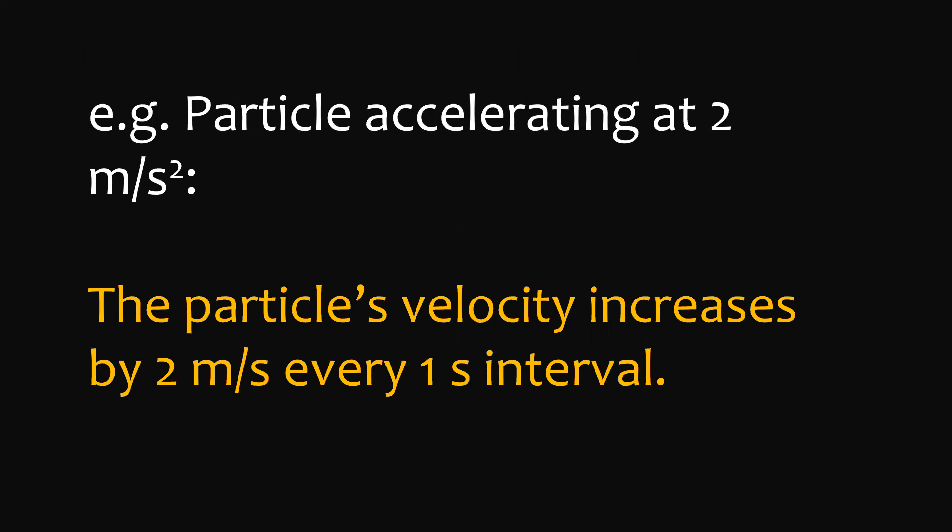If we have a particle accelerating at 2 meters per second squared, that means the particle's velocity increases by 2 meters per second every 1-second interval. Since the value of the acceleration is positive, the direction of acceleration is to the right — that is, if you define the right direction to be positive. You can arbitrarily choose the sign for each direction: right, left, upward, or downward from the reference point or origin. But if the right direction is positive, then the direction of acceleration is to the right.